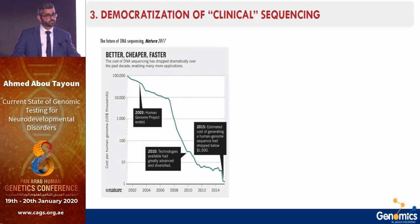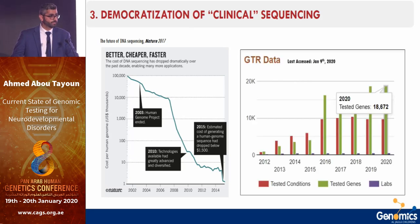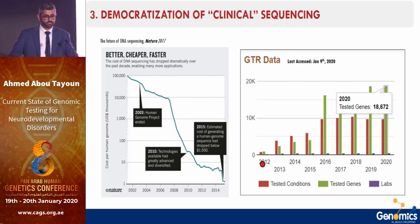With these gene discoveries and the cost-effectiveness of next-generation sequencing, there has been an explosion in availability of clinical genetic tests. Data from the Genetic Test Registry shows that although the number of labs hasn't changed much in the last 10 years, the number of genetic tests available has grown exponentially — now around 18,000 genetic tests are available through that website.